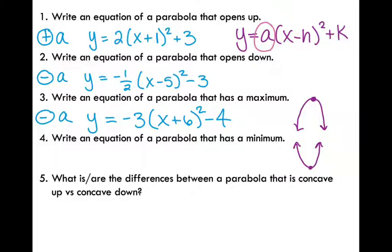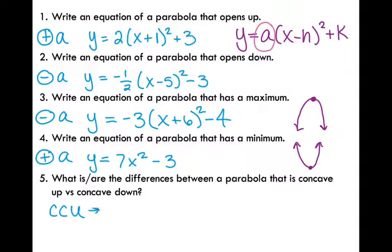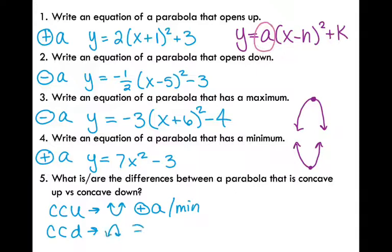Since I need a minimum, my parabola needs to open up, so that is going to be a positive a. I'm going to pick 7x² - 3 for my equation. Number five: what are the differences between a parabola that is concave up versus concave down? A parabola that is concave up is opening up — your a is going to be positive and you are going to have a minimum. A parabola that is concave down needs to open down, that means a is negative and you would have a maximum.